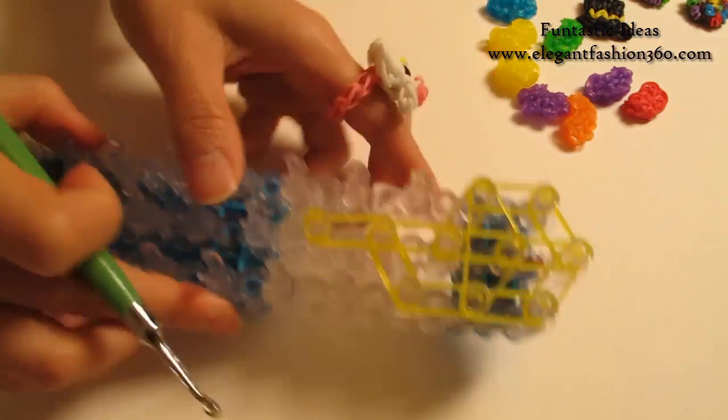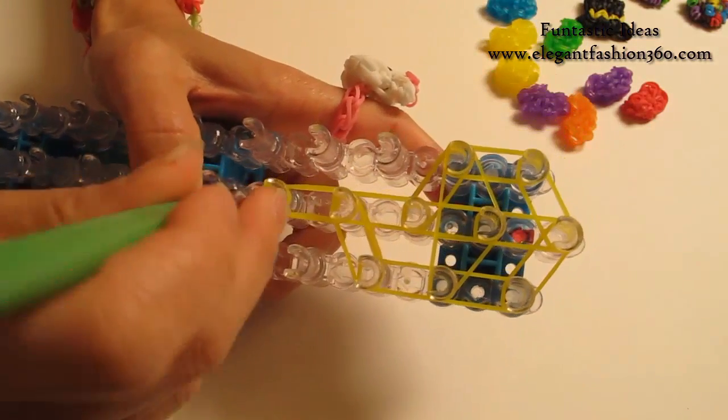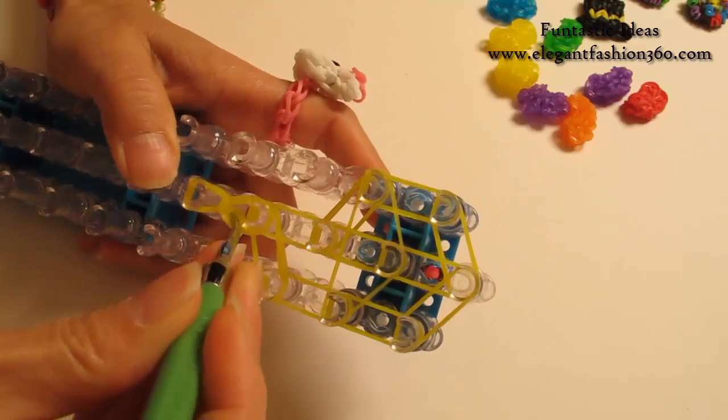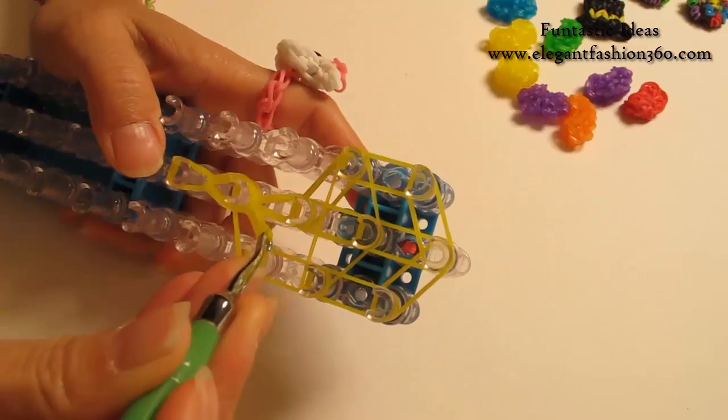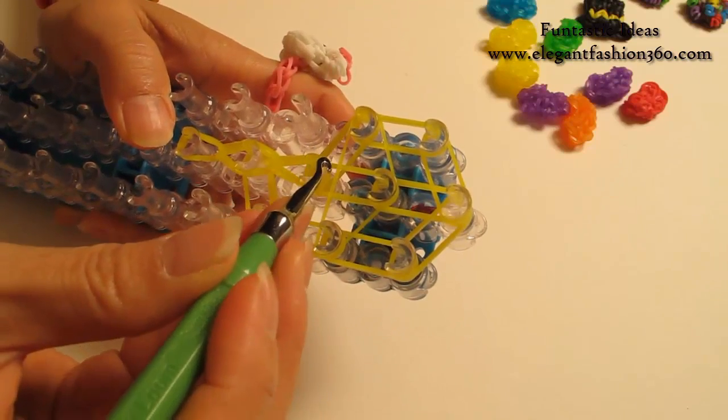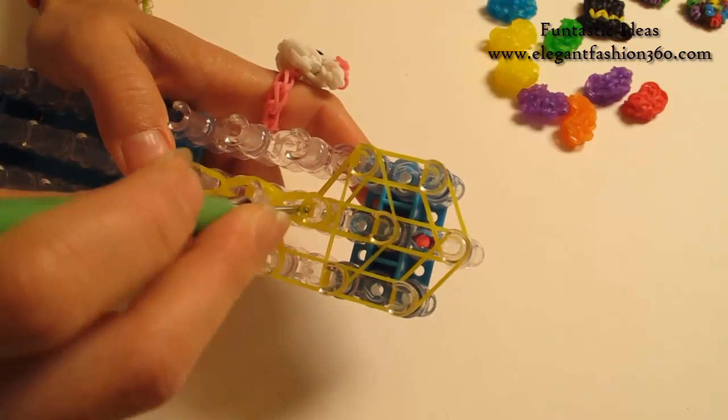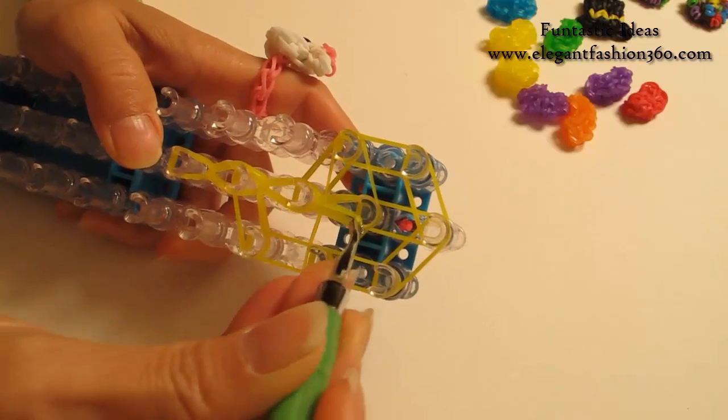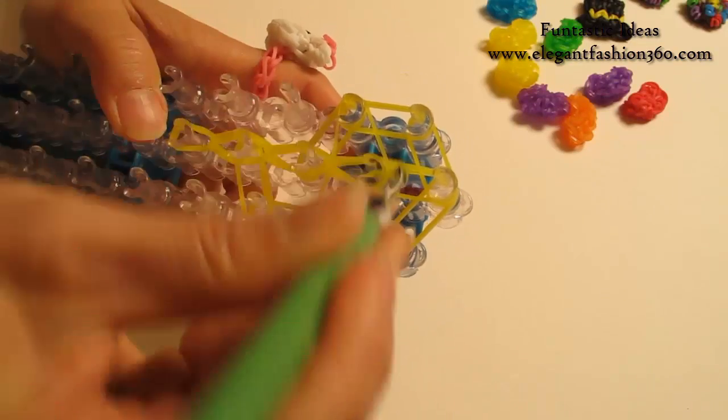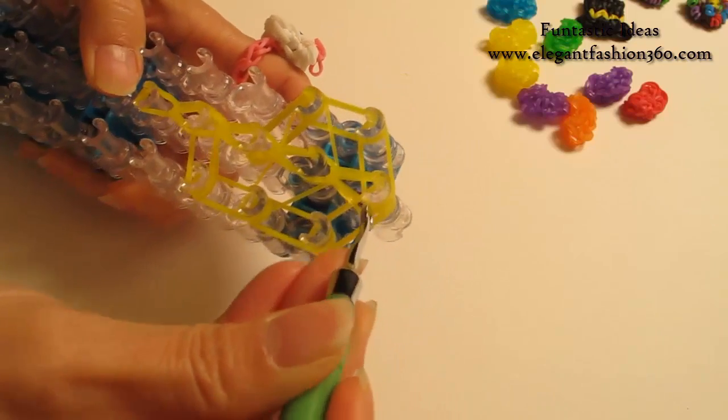Now we're going to lock in our loom and start looping. Grab the bottom two, hook it to the next one. First two, hook it to the next one on the center. And first two, hook it to the next one on the center. Bottom two, next one on the center.